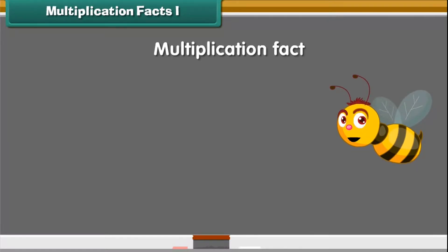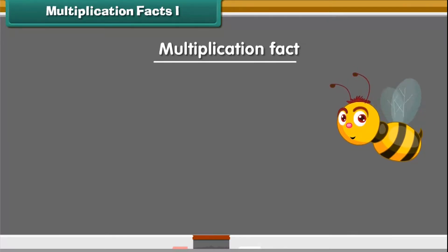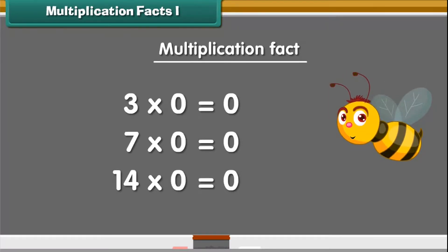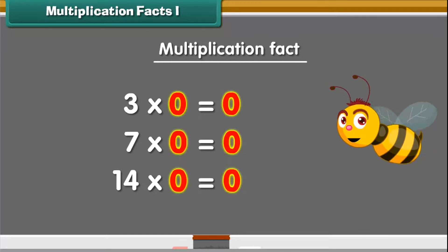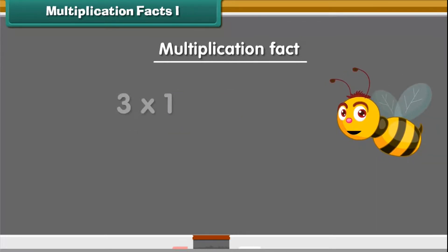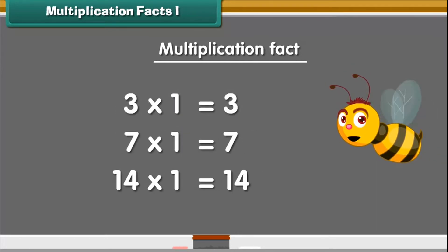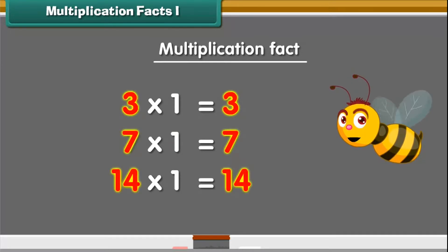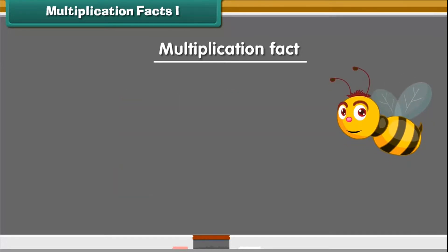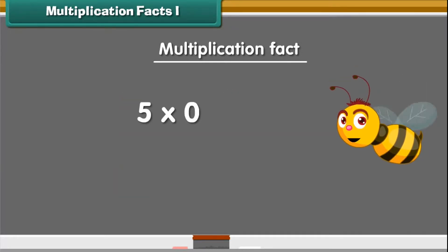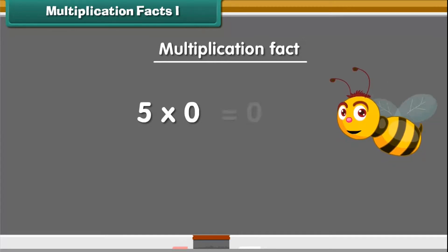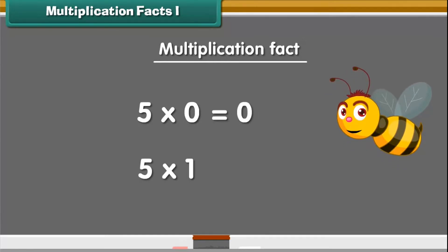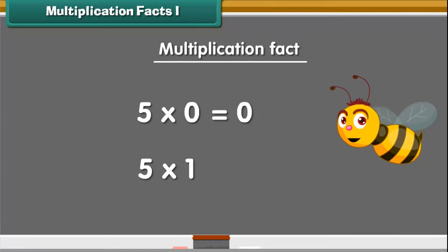We start with some multiplication facts. Any number multiplied by 0 is always equal to 0. A number multiplied by 1 is equal to the same number. For example, 5 multiplied by 0 is 0, and 5 multiplied by 1 is 5.